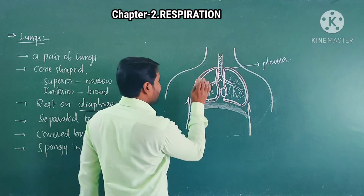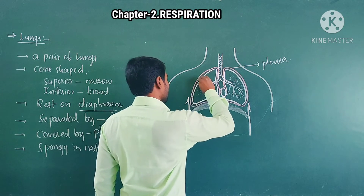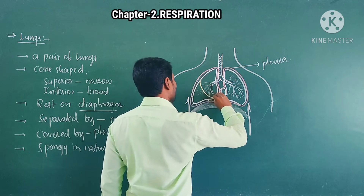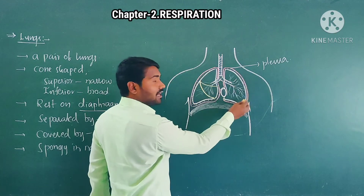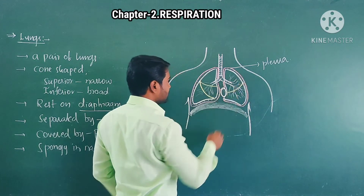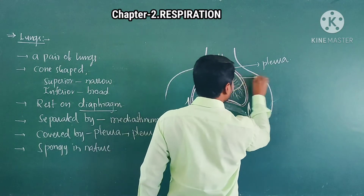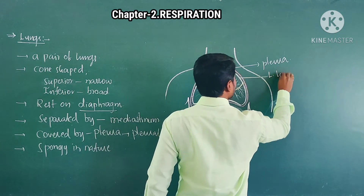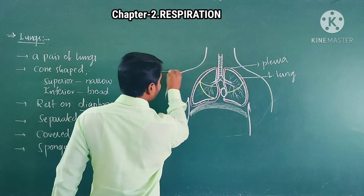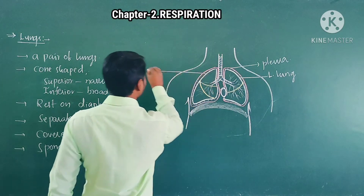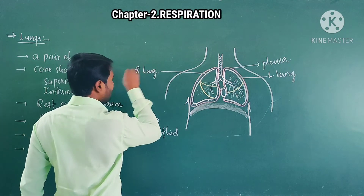Right lung is divided into three parts, whereas left lung is divided into only two parts.